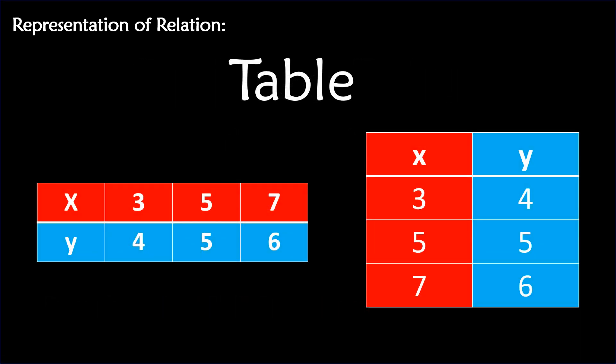This is the representation of relation using a table. It describes the behavior of the value of y as the value of x changes. Tables can be generated based on the graph and can be presented vertically or horizontally. We can see that the values of x are 3, 5, and 7, and the values of y in the table are 4, 5, and 6.